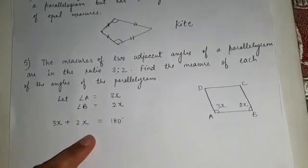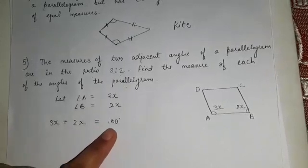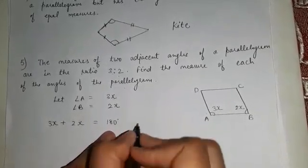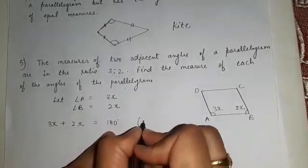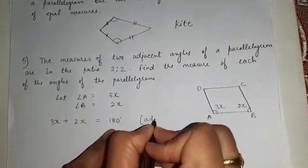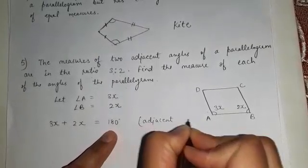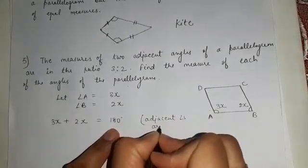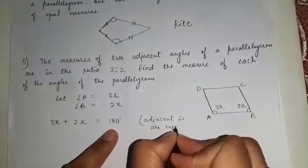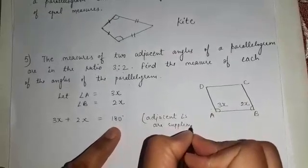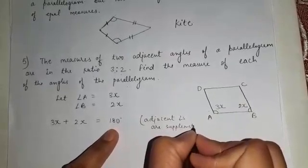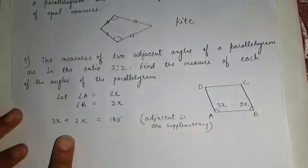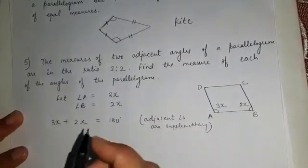The equation will be 3x plus 2x is equal to 180 degrees. Whenever we are using any property of a parallelogram, we need to mention it. So we mention that adjacent angles are supplementary.